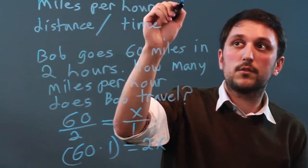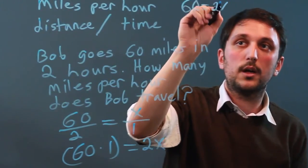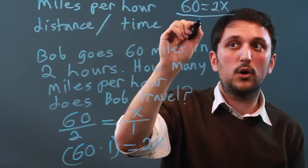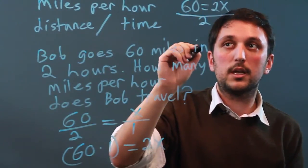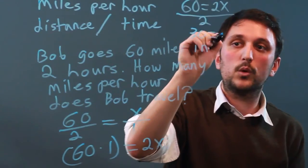So that means 60, I'm going to bring it up here, equals 2x. Now we just want single x, so we divide the whole equation by 2, giving us 30 equals x.